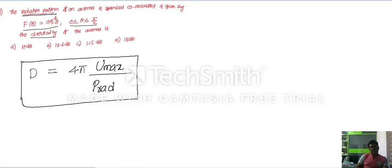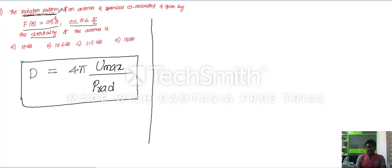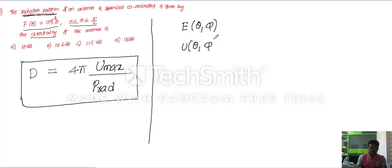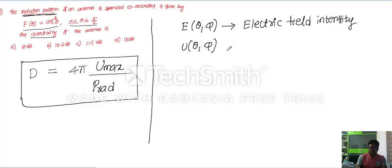The problem mentions the radiation pattern given as f(θ). We need to first identify whether it is an electric field or a radiation intensity that has been given. The electric field is indicated as E(θ), while the radiation intensity is denoted as U(θ, φ). Here, E is the electric field intensity and U(θ, φ) is the radiation intensity.